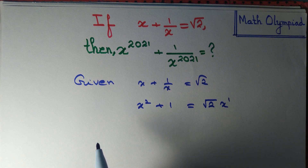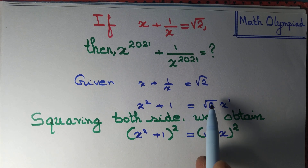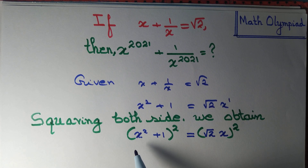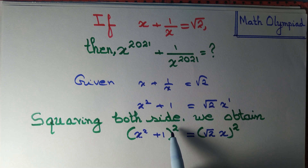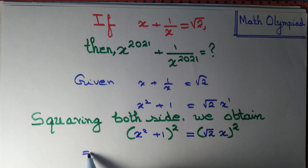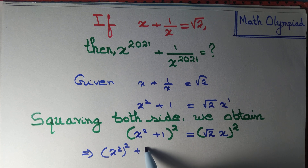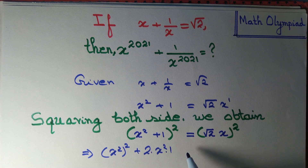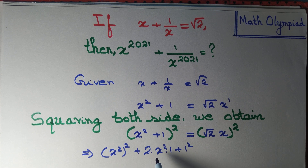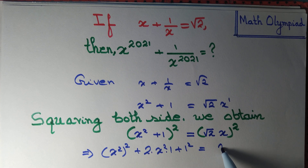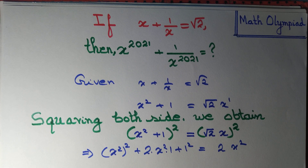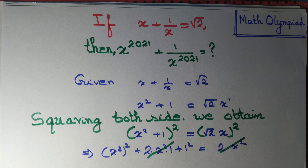So what we do is we square both sides, applying the formula (a + b)² = a² + 2ab + b². So (x² + 1)² = (√2·x)², giving x⁴ + 2x² + 1 = 2x². You can see that you can cancel 2x² from both sides.